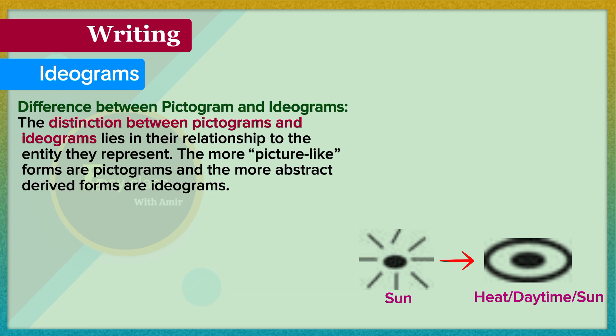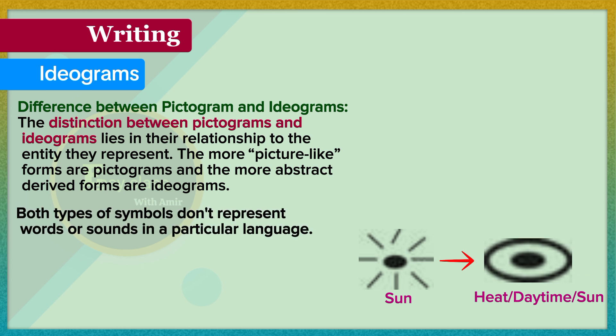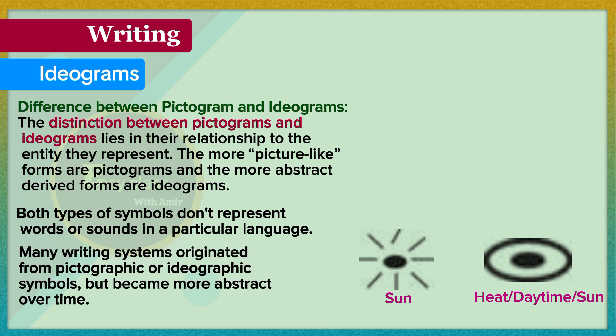The distinction between pictograms and ideograms lies in their relationship to the entity they represent. The more picture-like forms are pictograms and the more abstract derived forms are ideograms. Both types of symbols don't represent words or sounds in a particular language. Many writing systems originated from pictographic or ideographic symbols, but became more abstract over time.